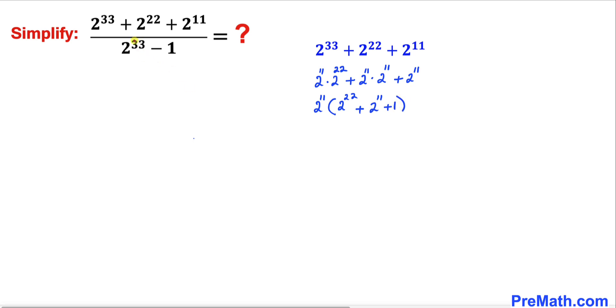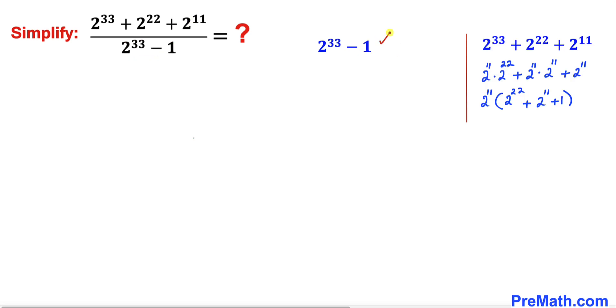Now let's focus on this denominator part. And here I have copied it down. Now let's recall this power rule of exponents. We are going to apply it on this 2 power 33. Therefore this could be written as 2 power 11, whole to the power 3, minus let's focus on this 1.